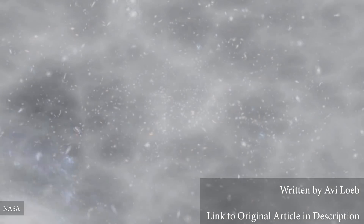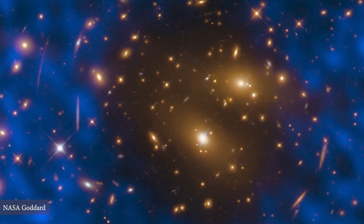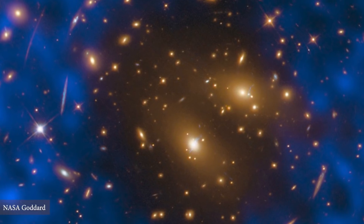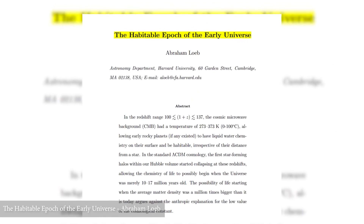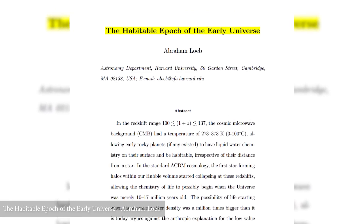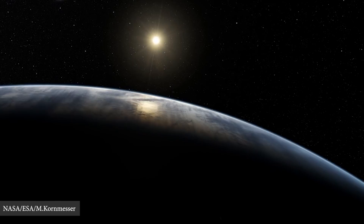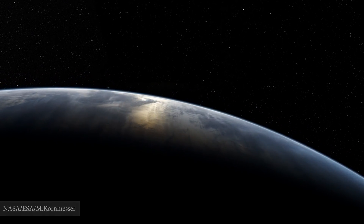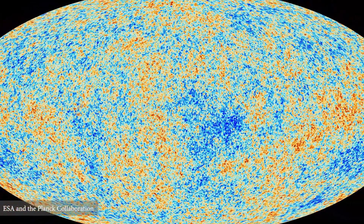When did life start in the universe? About 15 million years after the Big Bang, the entire universe was immersed in radiation at room temperature. In a 2013 paper, Avi Loeb labeled this phase as the habitable epoch of the early universe. If we had lived at that time, we wouldn't have needed the sun to keep us warm — the cosmic radiation background from the hot beginning would have sufficed.